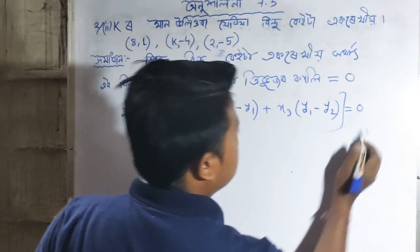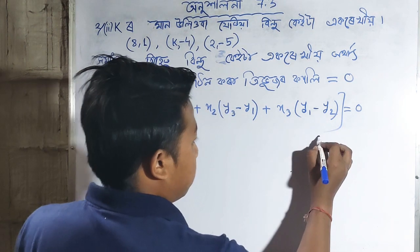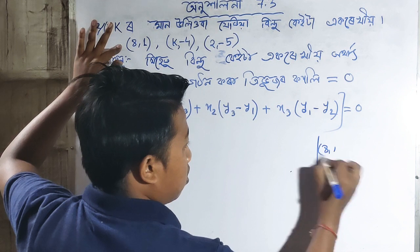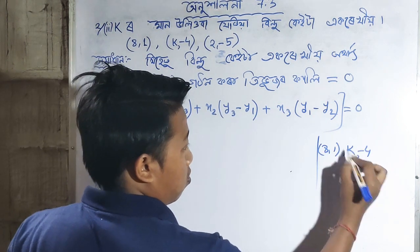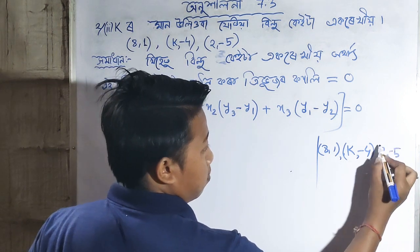Now I will substitute the given coordinate values. x1 is 3, y1 is 1. x2 is K, y2 is -4. x3 is 2, y3 is -5.